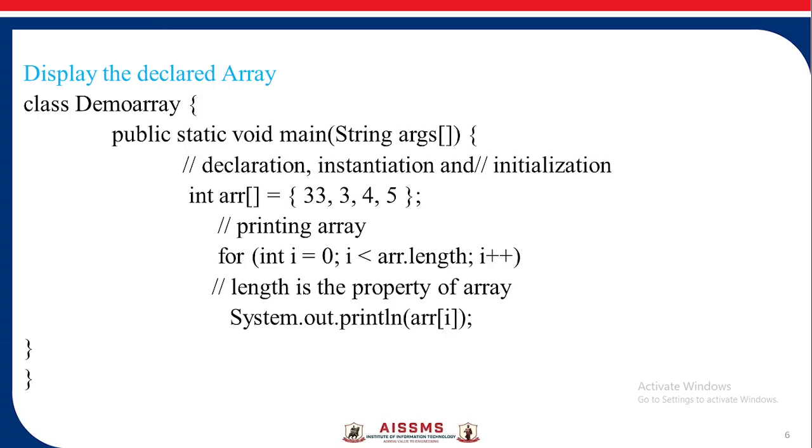Now displaying the declared array. Here we have taken an array demo array. We have declared, instantiated and initialized here directly: int ARR equal to 33, 3, 4, 5. Now we want to print the array, so we use the for loop and we use the length property of an array in the for loop and we print the array.